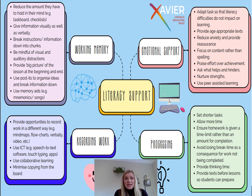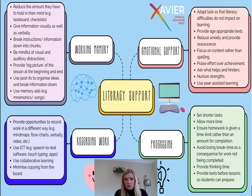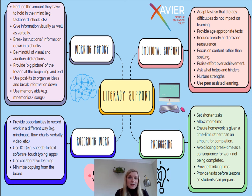There are eight areas altogether, with the first four displayed on this page: emotional support, working memory, processing, and recording work. We know that lots of children with literacy difficulties have difficulties with working memory and processing, hence their inclusion here. You may find it useful to pause the video for a few moments to look at some of the suggested strategies and make notes of the ones that could be useful for the pupils in your class who might be struggling.